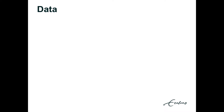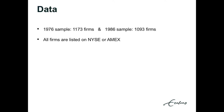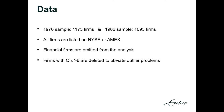Now I will discuss the data. In the research we have two samples: almost 1,200 firms in 1976 and almost 1,100 firms in 1986. All selected firms are listed either on the New York Stock Exchange or the American Stock Exchange. Financial firms are omitted from the analysis, and firms with a Q higher than 6 are deleted to avoid obvious outlier problems.